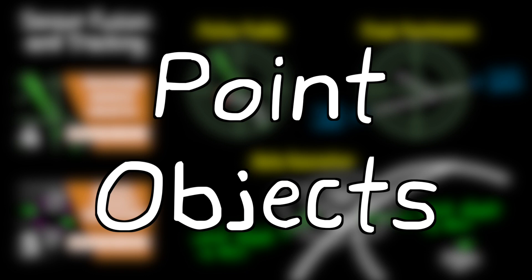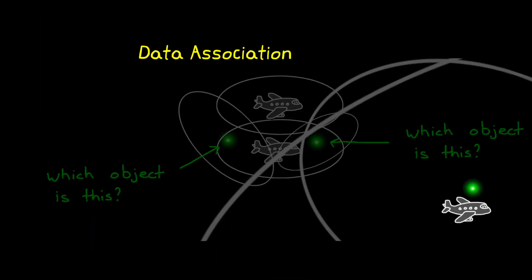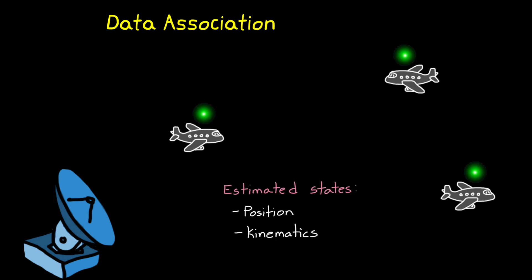And we did all of that for so-called point objects. These are objects that are small enough that the sensor returns at most a single detection for each object. Now it's an important distinction that a point object doesn't need to be physically small. It just needs to be smaller than the resolution of the sensor. For instance, a radar station might be tracking a very large aircraft that is also very far away. The radar would return a single ping, or a single reflection for the entire aircraft, and the whole thing has been reduced to a single detection.